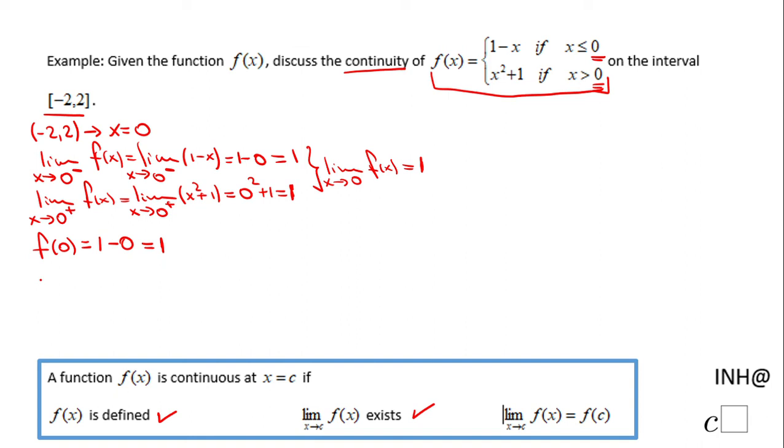Moreover, we have the third condition: limit when x approaches 0 of f(x) equals f(0). So these three conditions are accomplished.